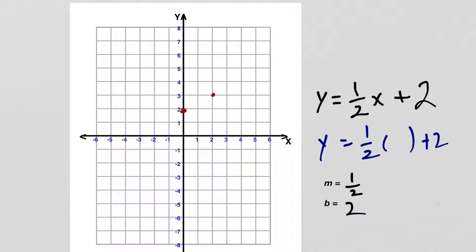Let's try x = -4. I didn't pick negative 3 or negative 5 because I want nice whole numbers — since I'm multiplying by ½, I need an even number to get a whole number answer. So y = ½ × (-4) = -2, and -2 + 2 = 0. For x = -4, the y is 0 — it lands right on the x-axis. That's the x-intercept.